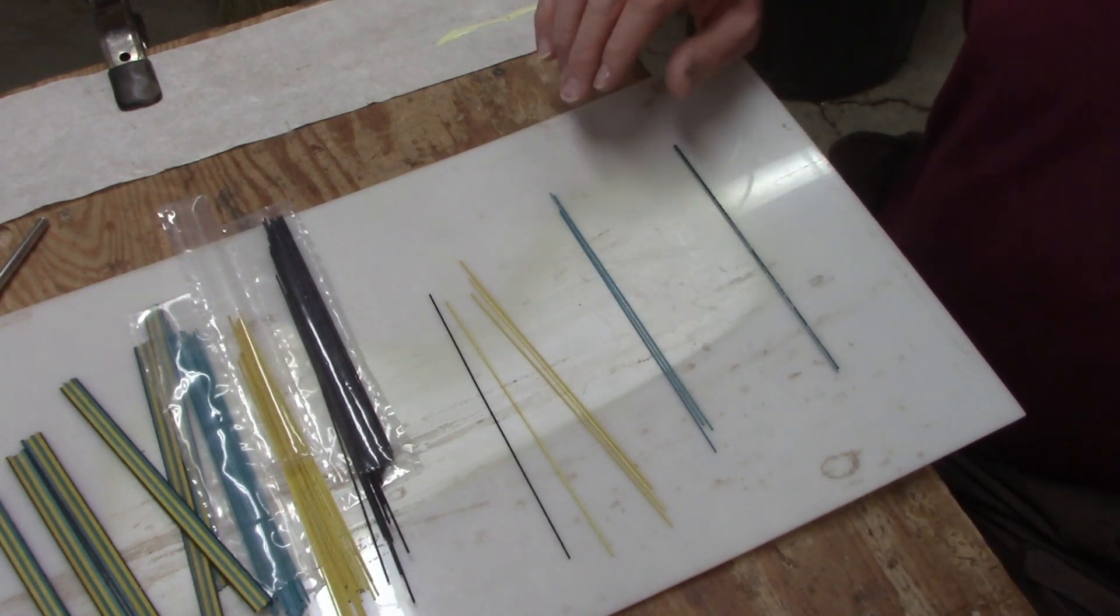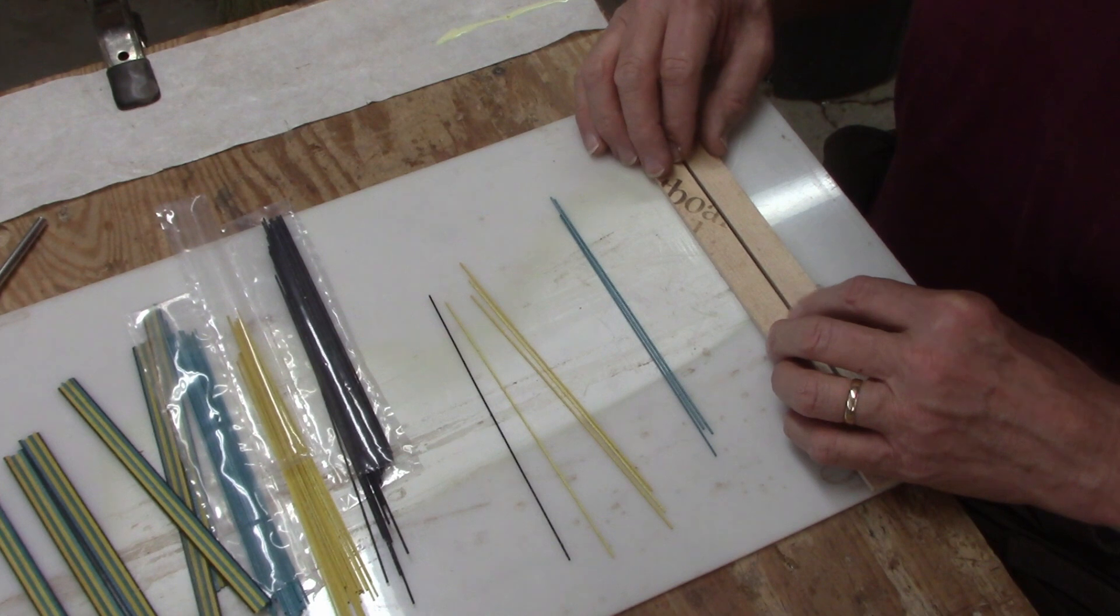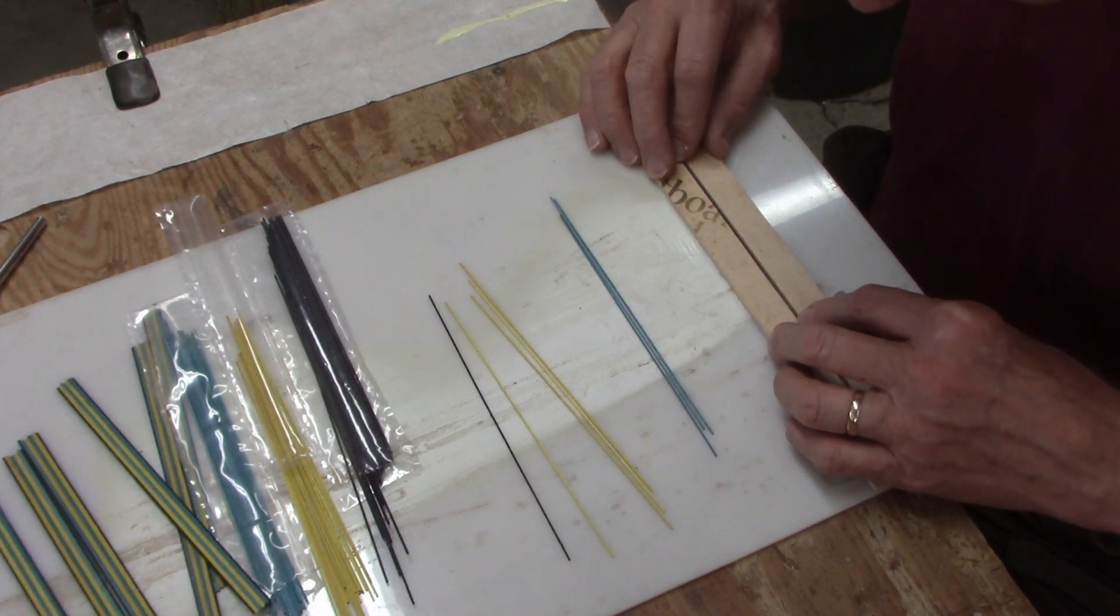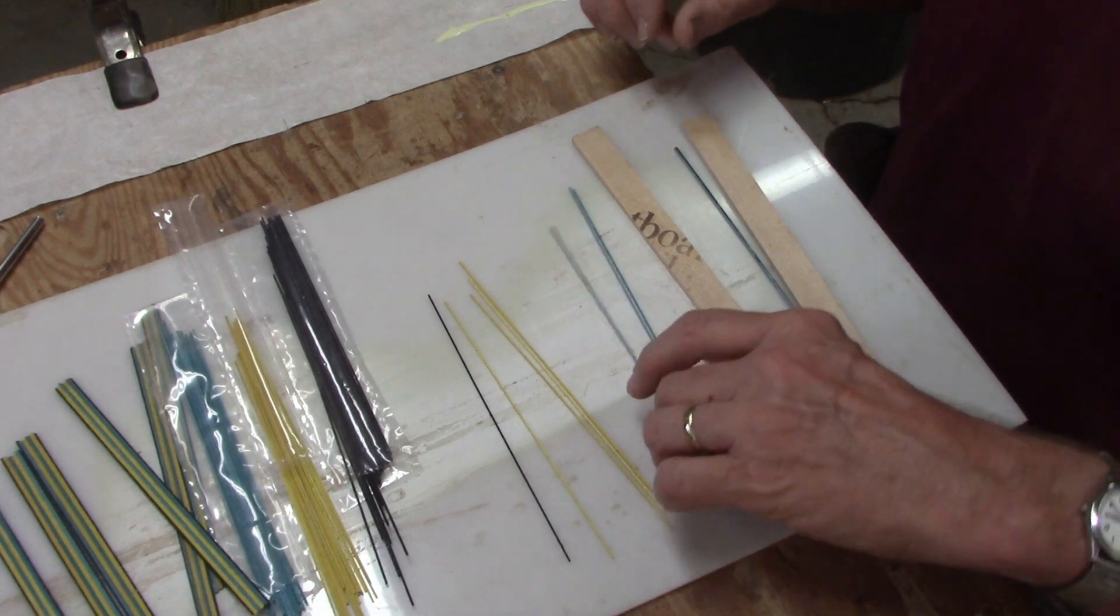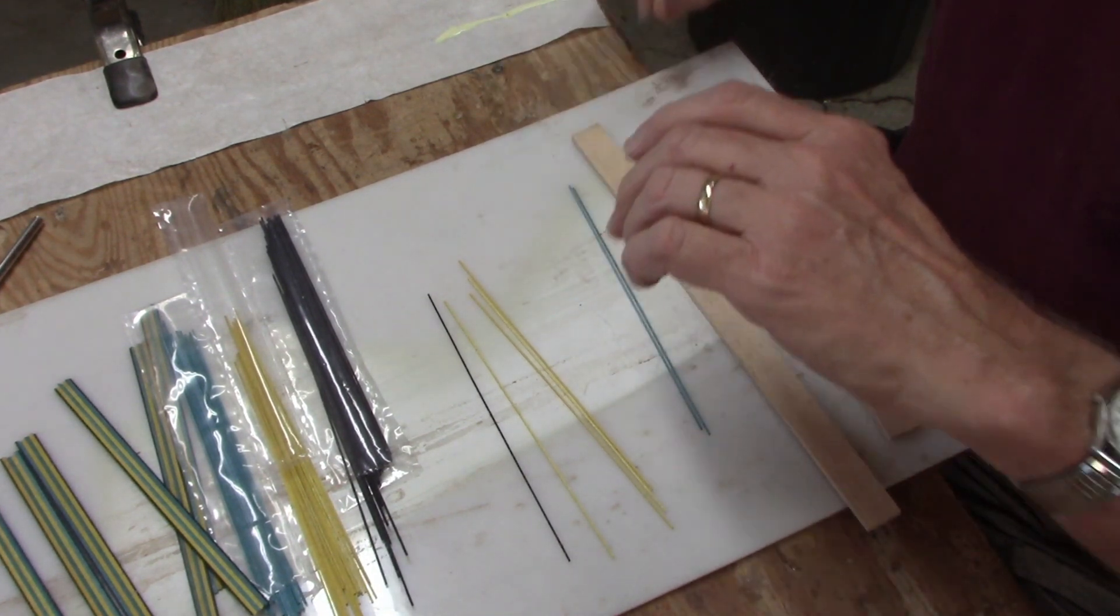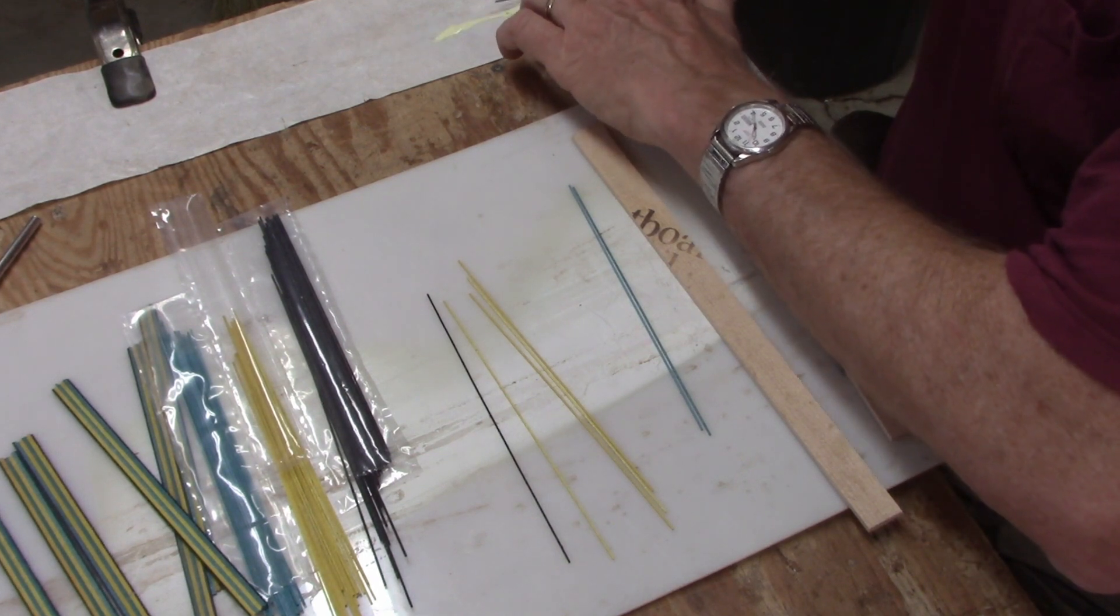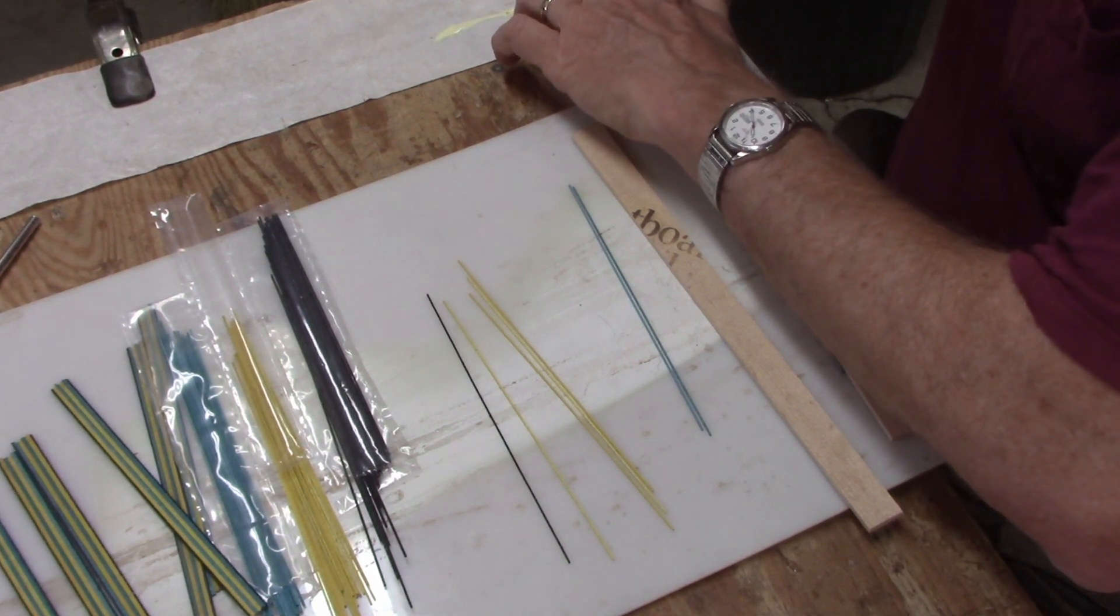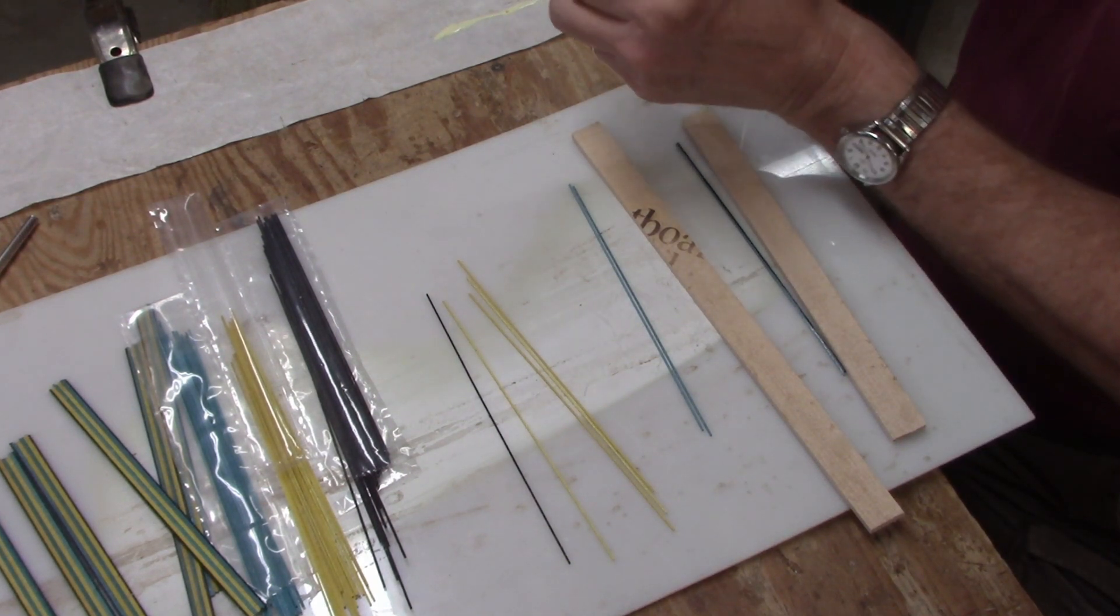That lays down there, and then I use a couple of square edges to push them together and make sure they're straight and glue the next piece. It's also a very messy process. My fingers get pretty filthy with glue after I've done a few of these sticks.